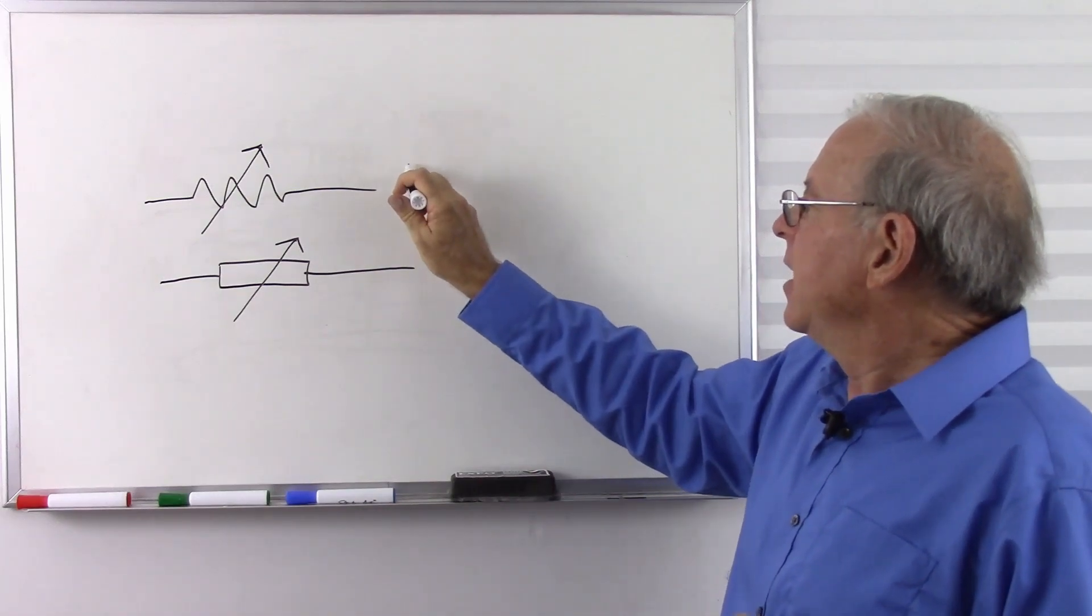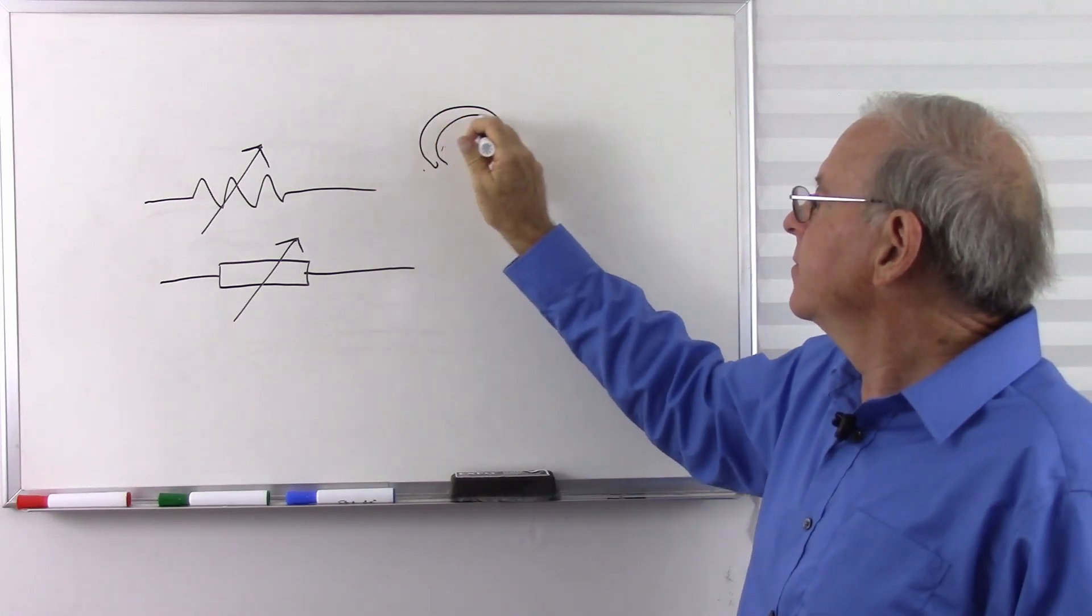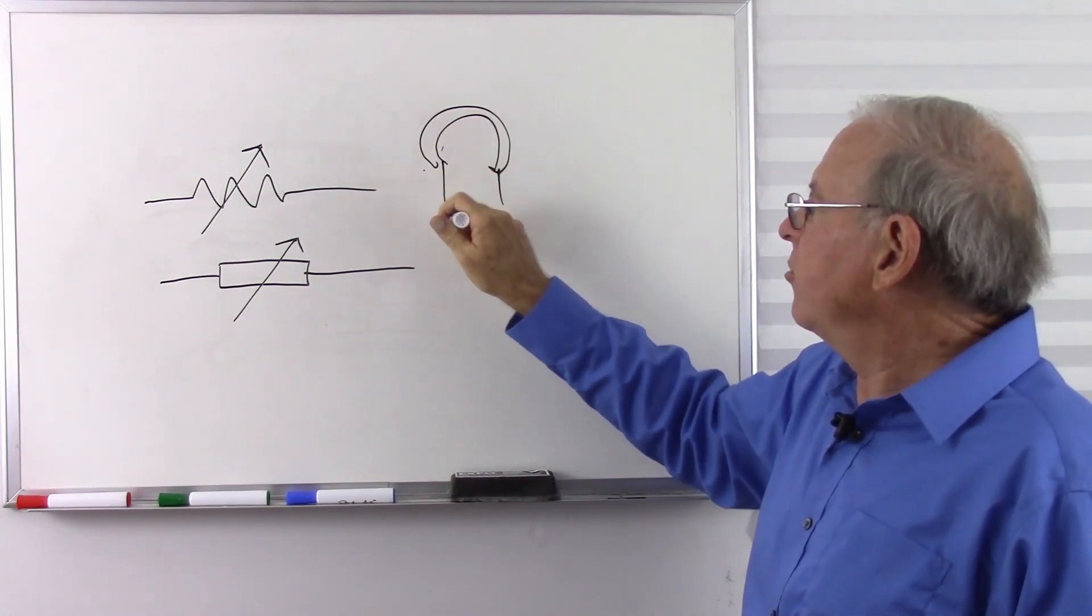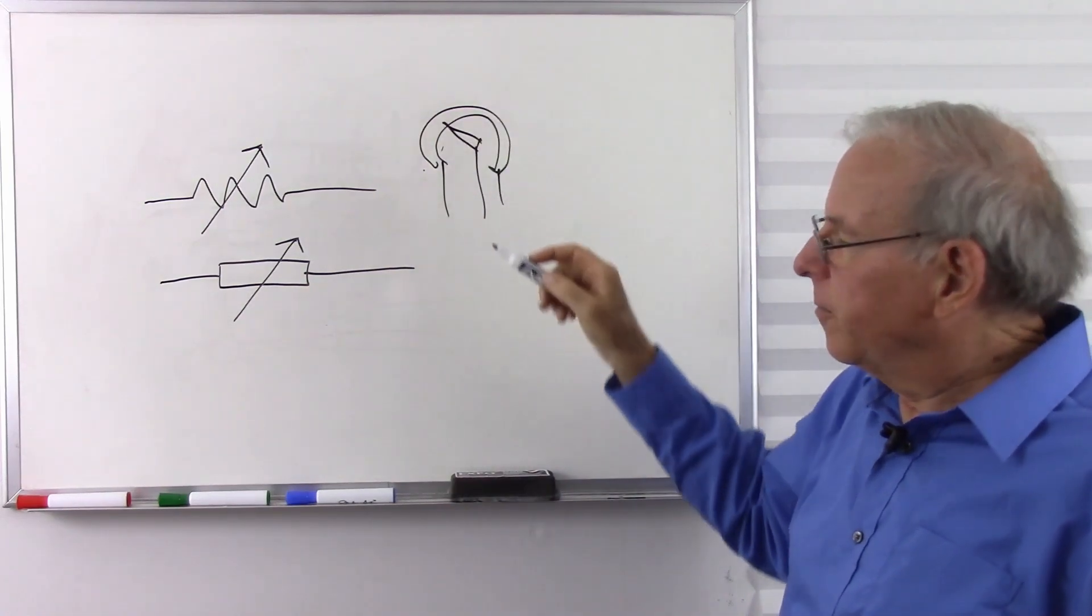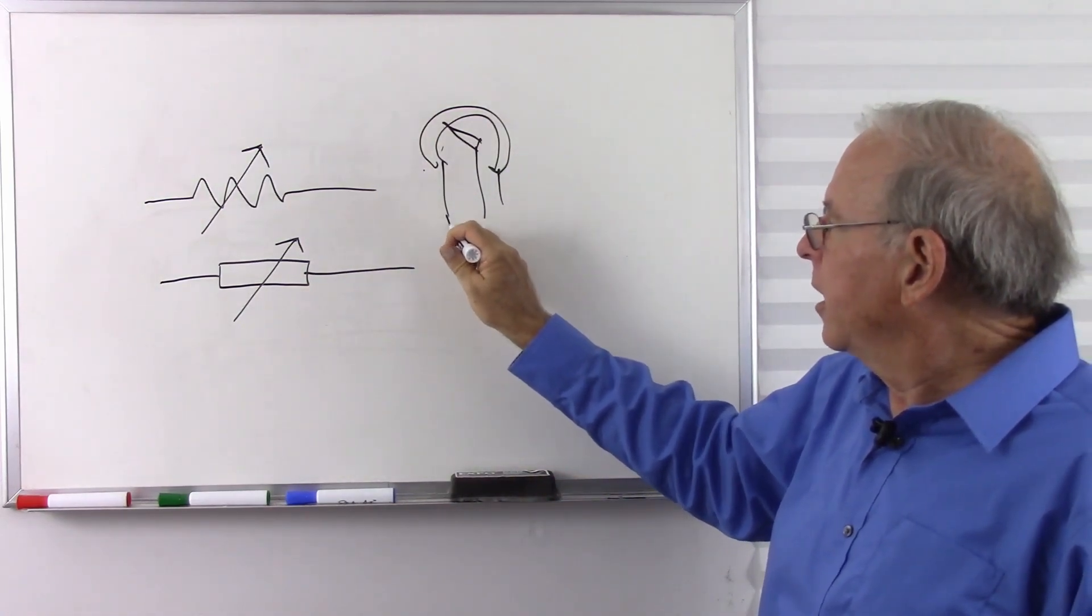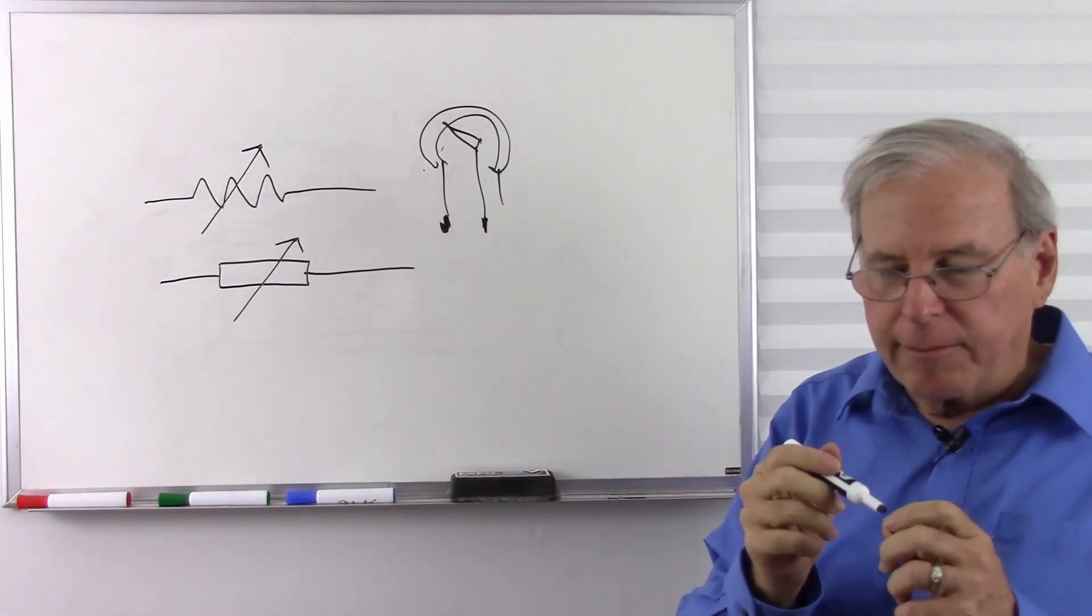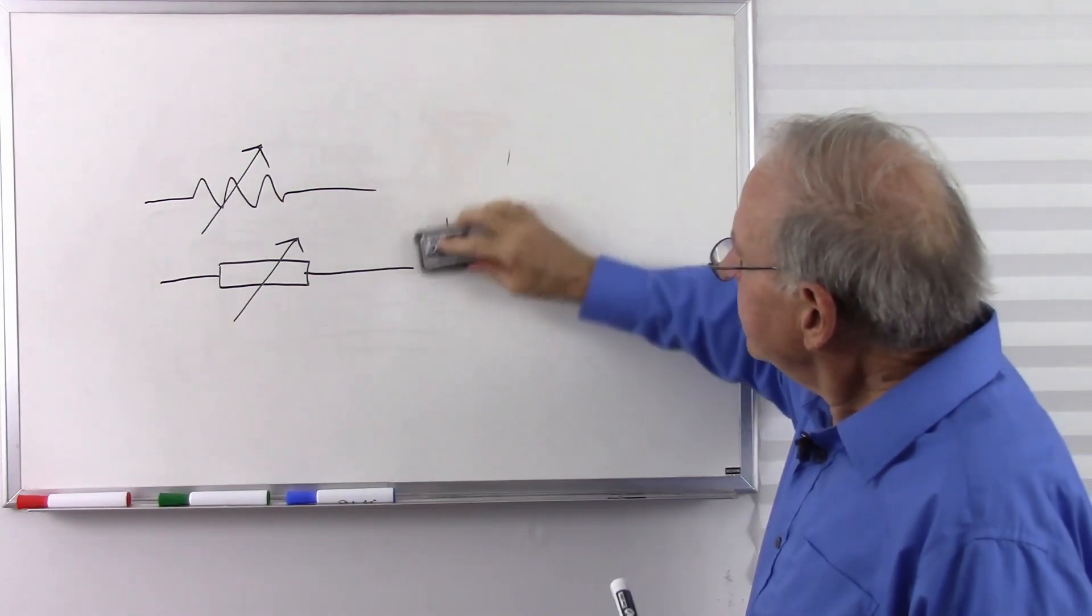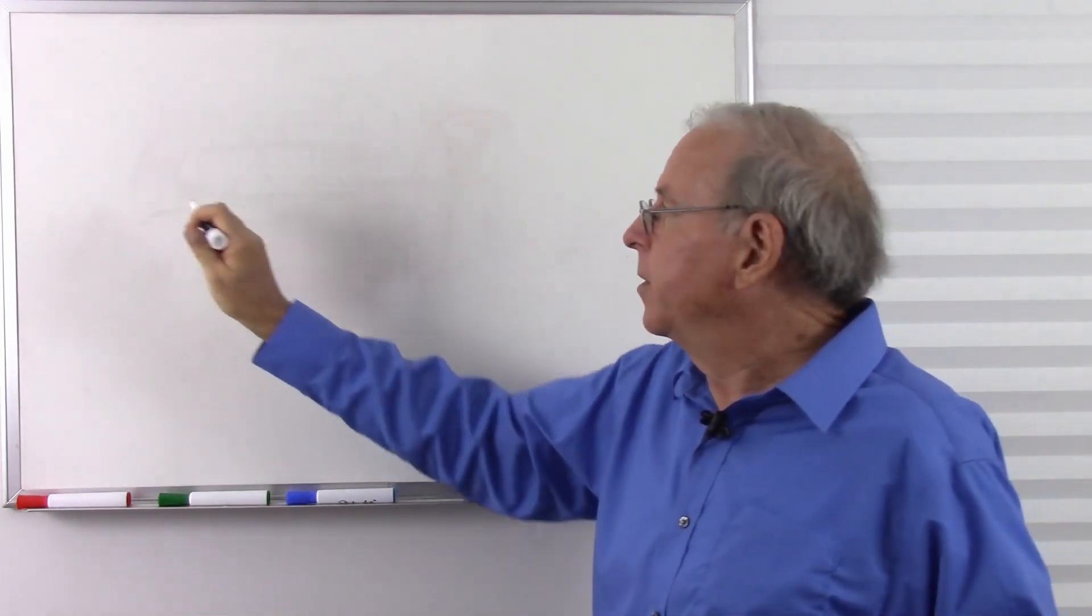All variable resistors are actually potentiometers. So what we really have is a device that has a connection at each end, and then a connection to the wiper. And so they're all really potentiometers. But if we only hook up to two leads, that becomes a variable resistor. Now, actually, to make a variable resistor, we're going to make that with a potentiometer.